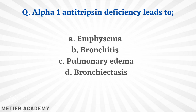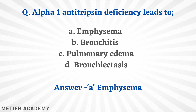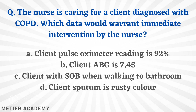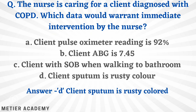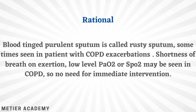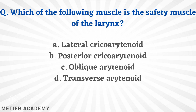Next: alpha-1 antitrypsin deficiency leads to — emphysema, bronchitis, pulmonary edema, or bronchiectasis? The correct answer is option A, emphysema. Next: a nurse caring for a client with COPD — which data warrants immediate intervention? Options: pulse oximetry 92%, ABG 7.45, shortness of breath walking to bathroom, or rusty-colored sputum. The correct answer is option D, rusty-colored sputum. Blood-tinged sputum is called rusty sputum; unlike the other findings which are expected in COPD, rusty sputum requires immediate intervention.